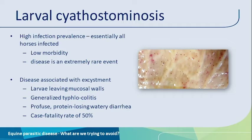We also know that the disease is associated with specific larval stages as mentioned before, particularly the process of emergence where the larvae are actually leaving the mucosal wall to make it back into the intestinal lumen. The syndrome is characterized by some classic symptoms, certainly in the acute stage. We have the generalized typhlocolitis. You will see edema accumulating in the walls of the intestines. The horse will have profuse watery and protein-losing diarrhea, sometimes bloody as well and with a bacterial superinfection. In the acute phase, a case fatality rate of 50% has been reported.